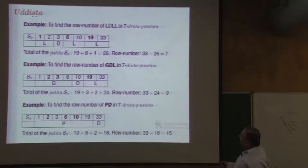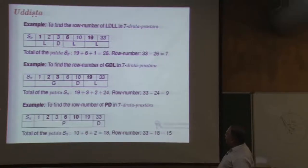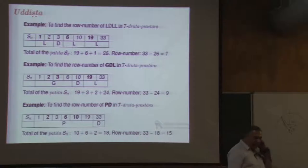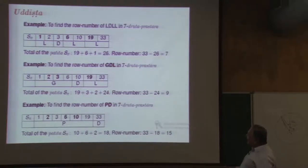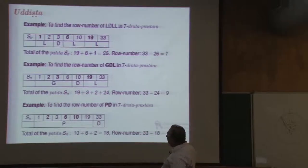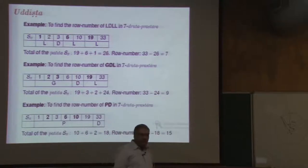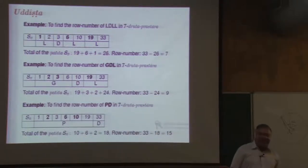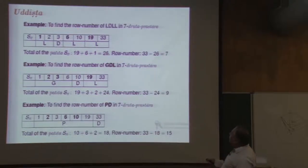For the Uddhishtha of Tala Prasthara — knowing the pattern, find the row number: LDLL is a pattern in the 7th Dhruta Prasthara which has 33 rows. The first 10 Sangadeva numbers are: 1, 2, 3, 6, 10, 19, 33, 63, 106, 191. Write the Sangadeva numbers 1, 2, 3, 6, 10, 19, 33 above LDLL as follows: above L write 2, above D write 1, above G write 4, above P write 6. For D, don't mark anything; for L, mark the first one; for G, mark second and third; for P, mark second, third, and fifth. Add all marked numbers: 1 + 6 + 19 = 26. Subtract 26 from 33 to get 7. So LDLL is the 7th row.